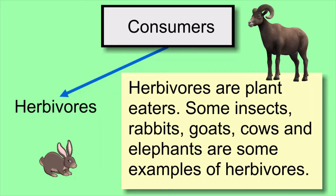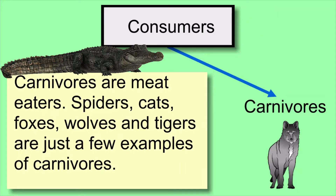Herbivores are plant eaters. For example, some insects, rabbits, goats, sheep, cows, and elephants are some examples of herbivores. Carnivores eat meat — spiders, cats, foxes, wolves, and tigers are just a few examples. Carnivores eat other animals.